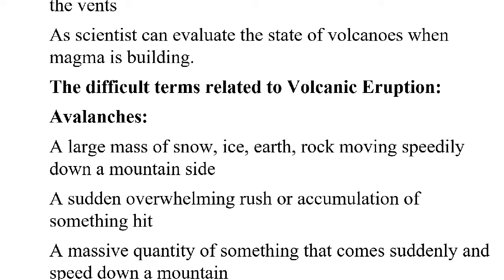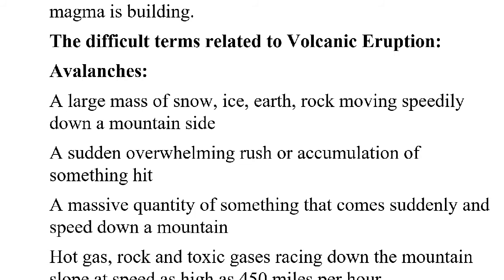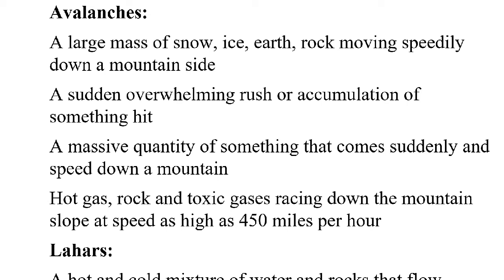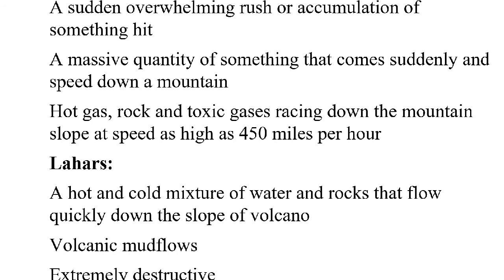Now for difficult terms — avalanche. An avalanche is a large mass of snow, ice, earth, or rock moving speedily down a mountainside. It is a sudden, overwhelming rush or accumulation of material — massive quantities of hot gas, rock, or toxic gases that come suddenly and speed down a mountain at up to 450 miles per hour.